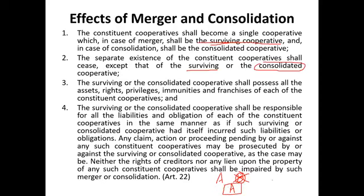For example in a merger: A and B merge — B's separate legal personality terminates, and only the surviving cooperative A remains. In consolidation, both A and B terminate their separate legal personalities because a new separate legal personality is created for the consolidated cooperative. The surviving or consolidated cooperative shall possess all the assets, rights, privileges, immunities, and franchises of each of the constituent cooperatives, and shall be responsible for all liabilities and obligations of each of the constituent cooperatives, as if the surviving or consolidated cooperative itself had incurred those liabilities.